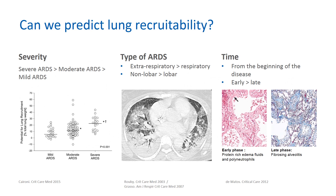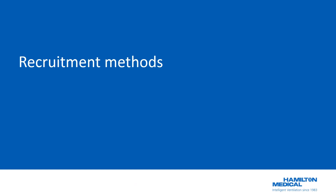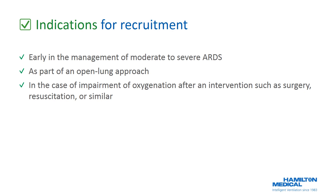Lung recruitability is more important in severe ARDS than in moderate and mild ARDS. Lungs subject to extra-respiratory injuries such as septic shock or pancreatitis have higher recruitment potential than lungs subject to respiratory injuries such as pneumonia. Indications for lung recruitment should be considered early in the management of moderate to severe ARDS as part of an open lung approach, and in case of impairment of oxygenation after an intervention such as surgery, resuscitation, or similar.